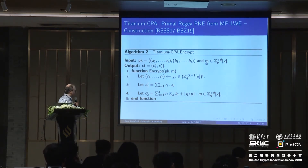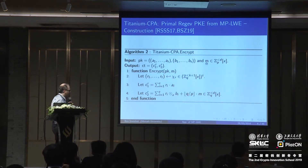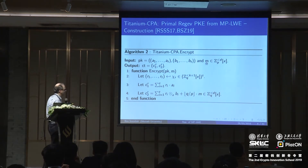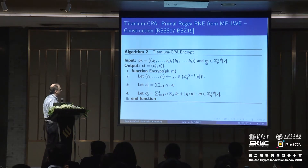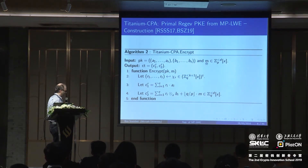You can see that here we use the middle product taking D coefficients, matching the dimension of A. We encode the message by multiplying it by Q over P. One thing you may notice that is different from the original primal Regev is that we use different operations of multiplication for C1 than for C2 — here we use the middle product, while this other operation denotes just the usual polynomial multiplication with no mod reduction and no middle product. We'll see in a minute why we have to do this.